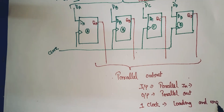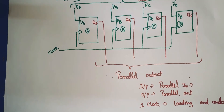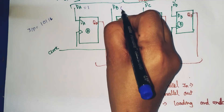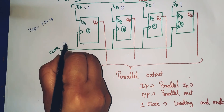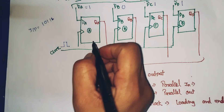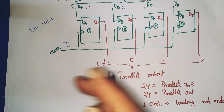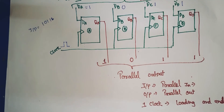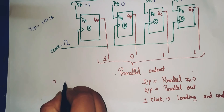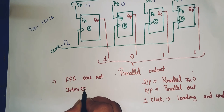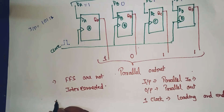One clock pulse is required for loading and unloading. Unloading means — if the input data sequence is assumed to be 1011, we will apply one clock pulse. The flip-flops are not interconnected.